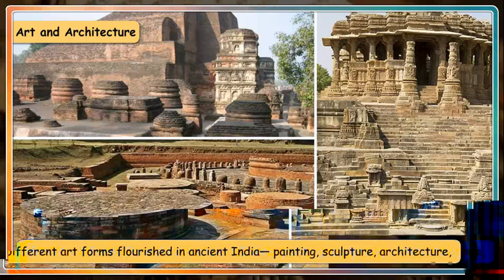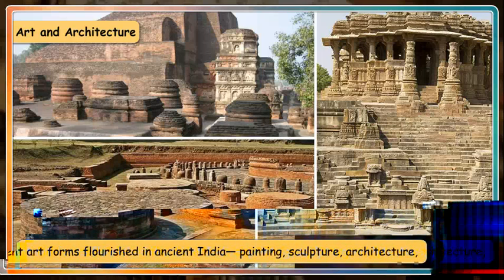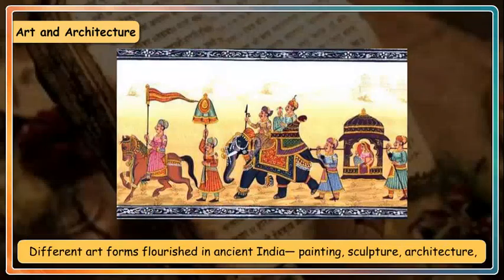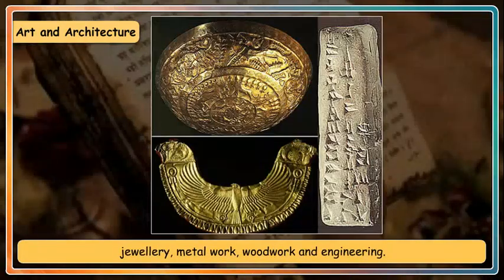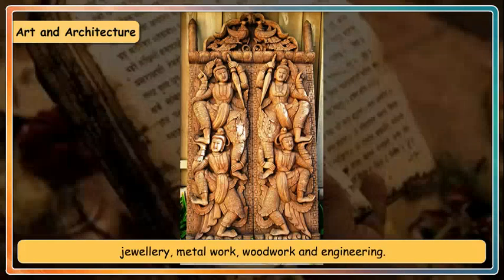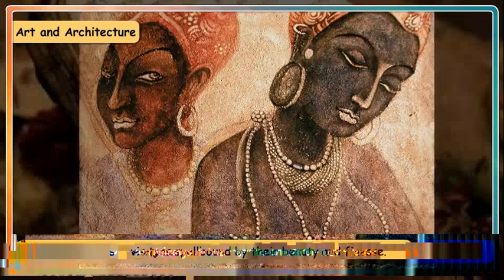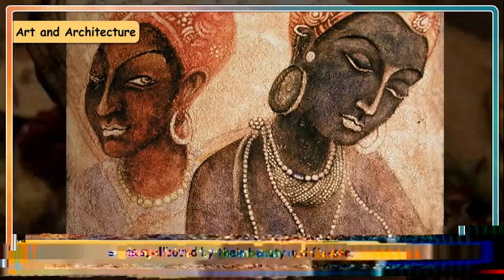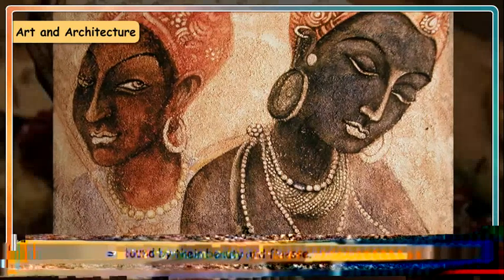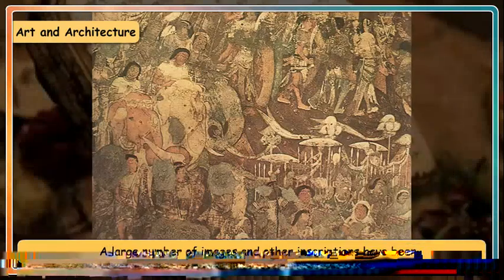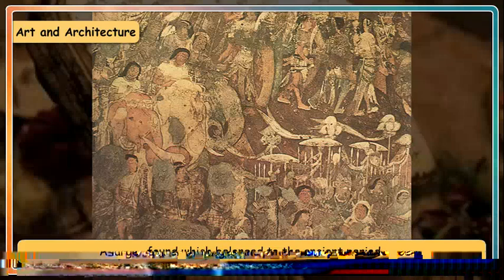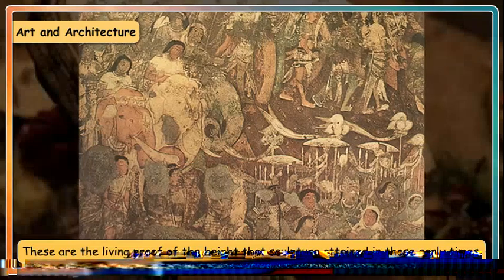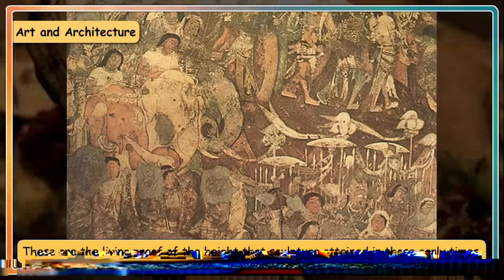Different art forms flourished in ancient India: painting, sculpture, architecture, jewellery, metalwork, woodwork and engineering. The paintings in the Ajanta and Ellora caves leave visitors spellbound by their beauty and fineness. A large number of images and inscriptions have been found from the ancient period, serving as living proof of the heights that sculpture attained in those early times.